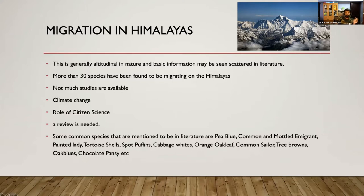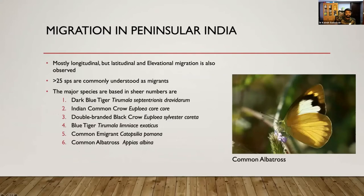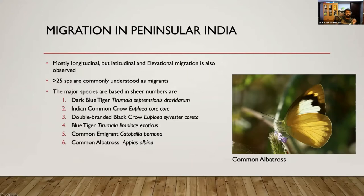Some common species mentioned in literature as migrating in the Himalayas include the pea blue, common emigrant, mortal immigrant, painted lady, tortoiseshells, small whites, cabbage whites, leaf sailors, tree nymphs, and pansies. Coming to migration in the Peninsula of India, the migration here is longitudinal — butterflies travel east to west or west to east — but there is also a latitudinal component, north to south and south to north, and an elevational component, from the tops of the Ghats down to the coast. According to our estimates, there are at least 25 species which are migrants. The major migrants include the dark blue tiger, common Indian crow, double-branded crow, blue tiger, common immigrant, and common albatross.